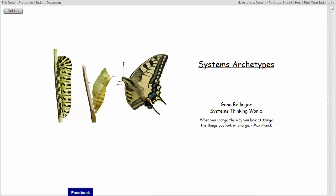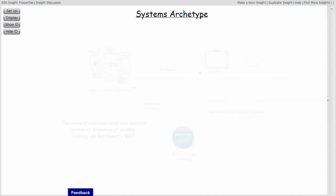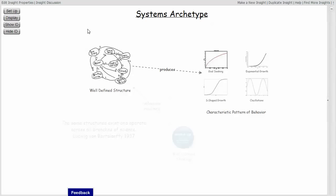I wanted to spend a few minutes and provide an introduction to the Systems Archetypes Learning Thread. A Systems Archetype is a well-defined structure that tends to produce a characteristic pattern of behavior.